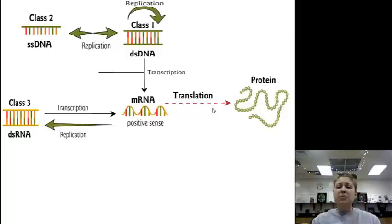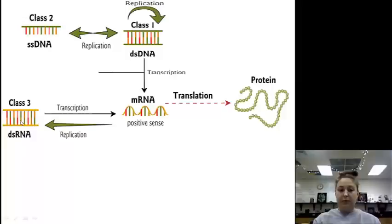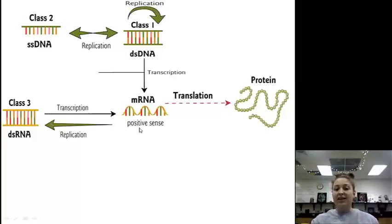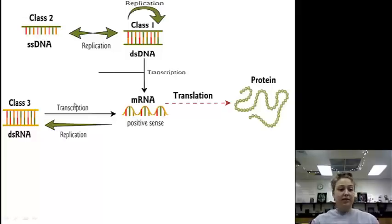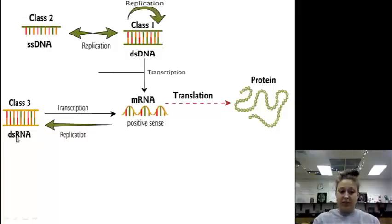Class 3 is double-stranded RNA. This gets a little more tricky. It's already RNA, so what we're going to do is rip it apart and transcribe it into the positive-sense RNA, then do translation into proteins. How does it replicate? It keeps going through transcription and then transcribes the other side to come back to double-stranded RNA.